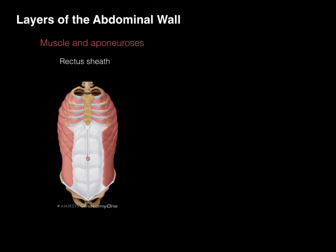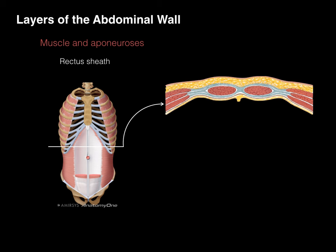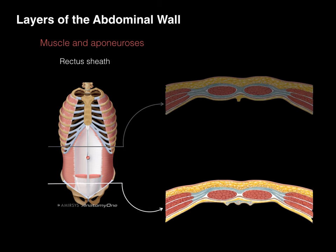The rectus sheath is this white structure. In cross-section above the umbilicus, we see the external oblique, internal oblique, and transverse abdominis, with the rectus abdominis and linea alba. The yellow arrow represents the external oblique and anterior lamina of the internal oblique aponeurosis coursing over the front of the rectus abdominis, fusing at the linea alba. The second arrow represents the transverse abdominis aponeurosis and posterior lamina of the internal oblique aponeurosis, which courses behind the rectus abdominis to fuse at the linea alba — so there is both an anterior and posterior lamina.